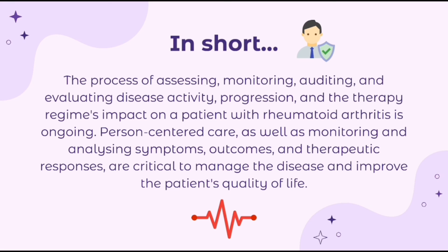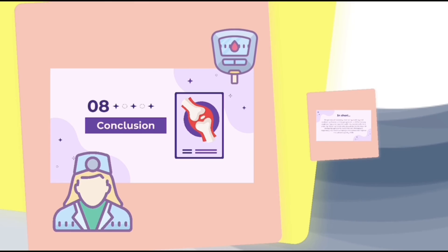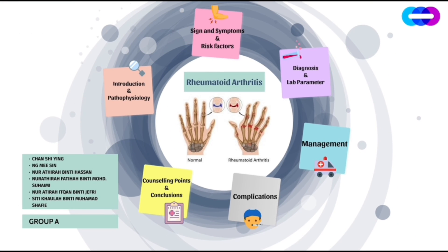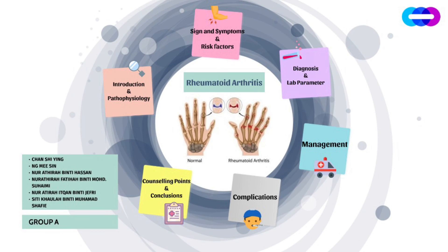In summary, the process of assessing, monitoring, auditing, and evaluating disease activity, progression, and the therapy regimen's impact on patients with rheumatoid arthritis is ongoing. Person-centred care, as well as monitoring and analyzing symptoms, outcomes, and therapeutic responses, are critical to managing the disease and improving the patient's quality of life. That's the end of this video — thank you for your kind attention, and we hope you now have a better understanding of rheumatoid arthritis.